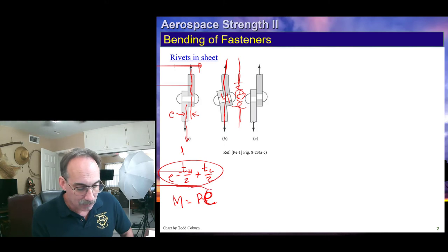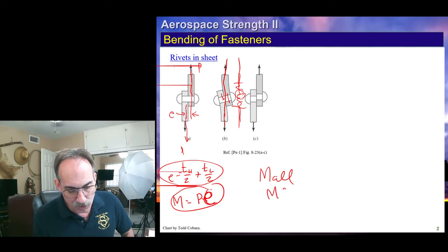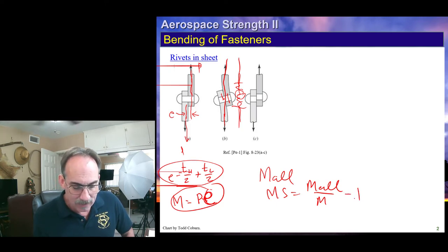In that case, we will calculate the moment on the joint, and then we will find the moment allowable for the bolt and write the margin of safety as the moment allowable for the bolt divided by the moment due to the eccentricity minus one.